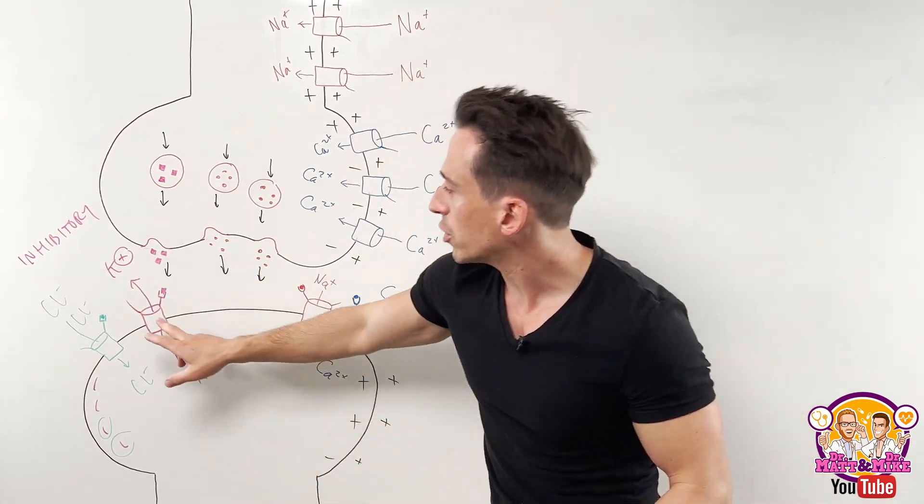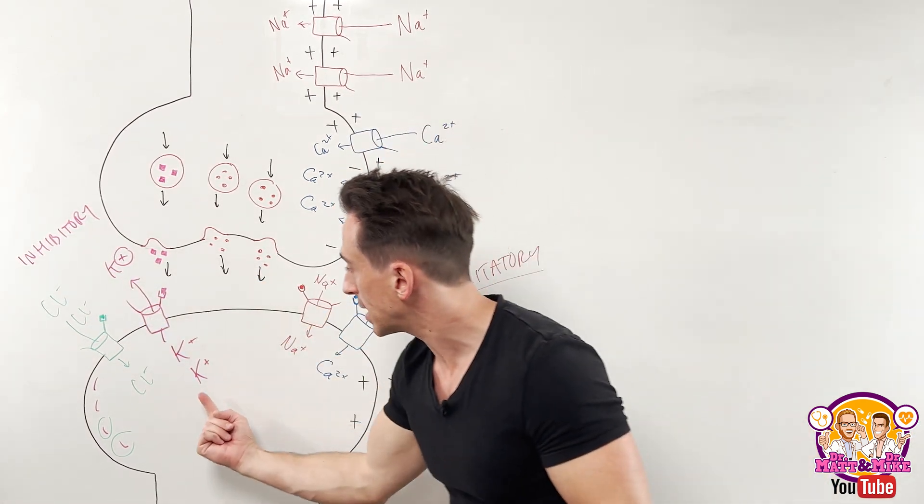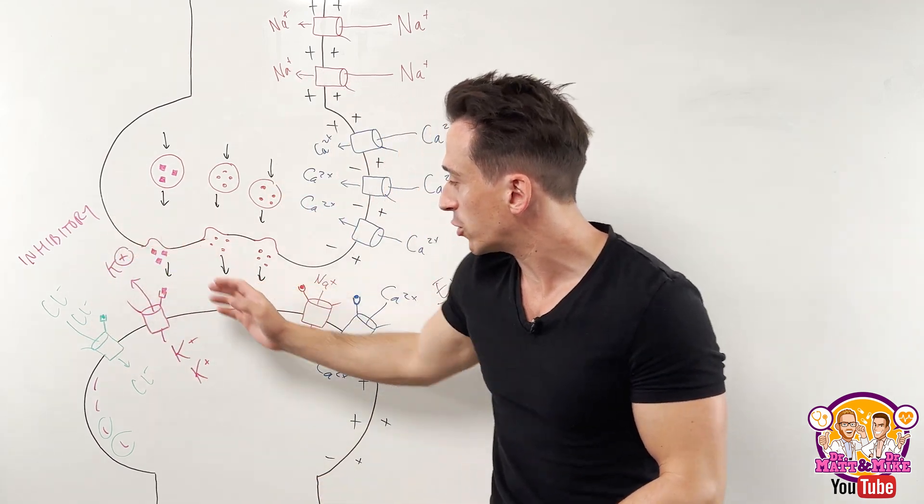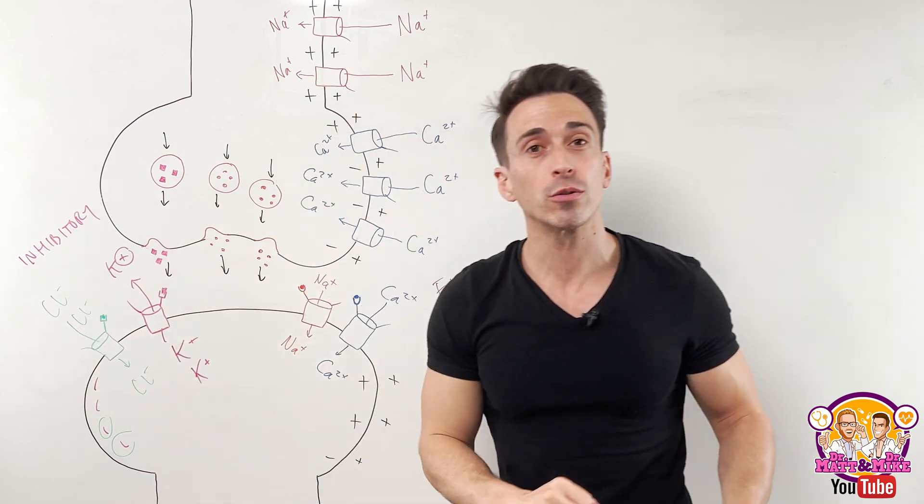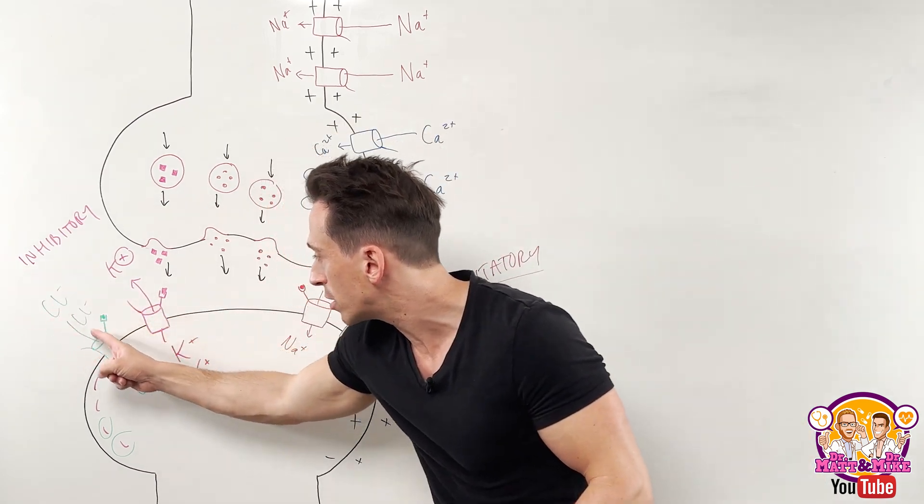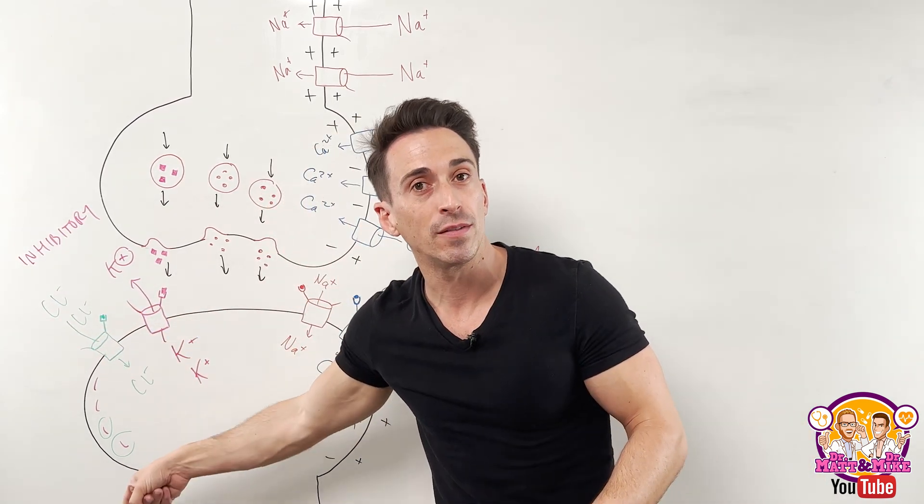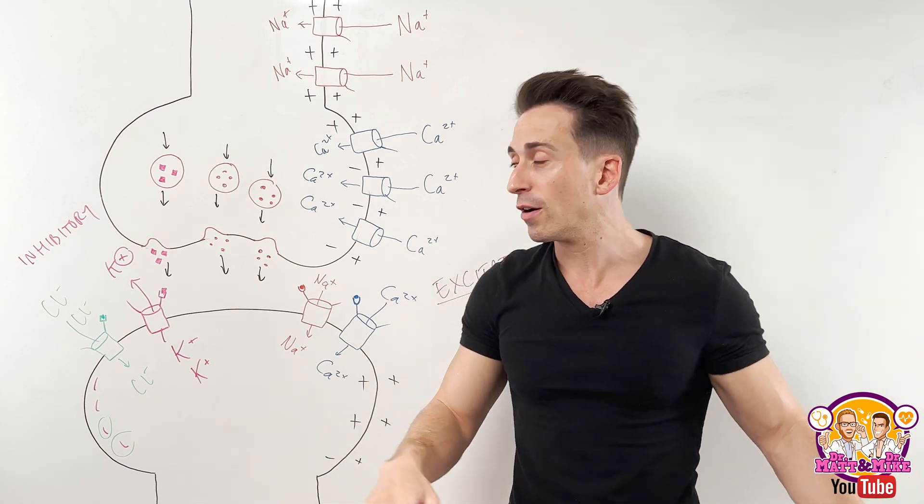Now, if it's inhibitory, it's either going to open potassium channels and that potassium goes out, carrying the positive charge with it and it becomes negative inside, or it's going to trigger chloride channels to open up, telling negative chloride to move in the cell, making it negative inside, stopping any signal from being sent.